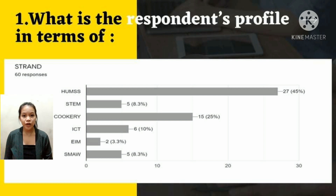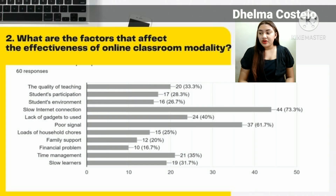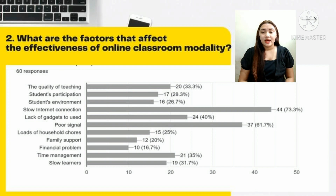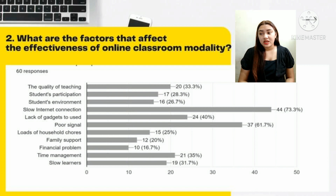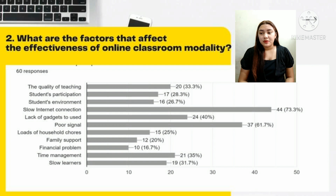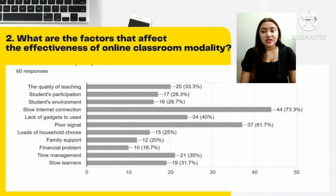Number two: what are the factors that affect the effectiveness of online classroom modality? The data shows the different factors that affect the effectiveness of online classroom modality. One of the factors is internet connection, with 73.3%, because the main reason why this country is still branded with low internet speed is because the country severely lacks cell sites. The Philippines has the lowest cell site density in Asia, ranking 110 out of 139 countries in terms of mobile data speed, with an average of 18.4%. The problem of poor signal stands at 61.7%, as there are many reasons a signal connection might appear slow.